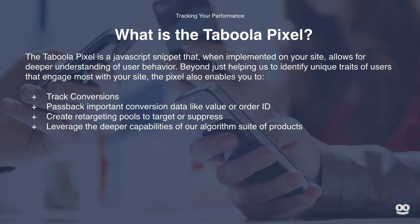Now let's dive into the basics. What is the Taboola Pixel? The Taboola Pixel is a JavaScript snippet that, when implemented on your site, allows for deeper understanding of user behavior. Beyond helping us to identify unique traits of users that engage most with your site, the Pixel also enables you to track conversions, pass back important conversion data like value or order ID, create retargeting pools to target or suppress, and leverage the deeper capabilities of our algorithm suite of products.